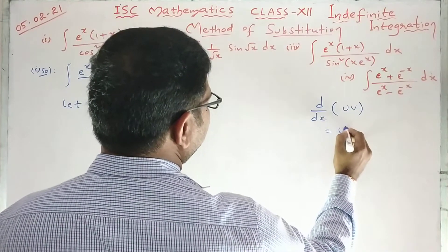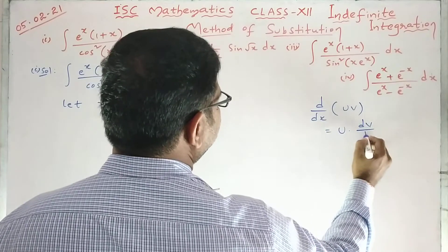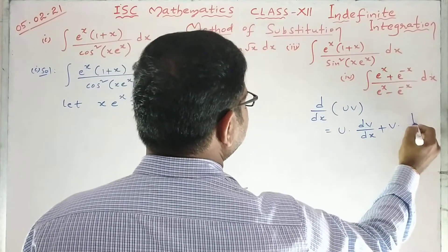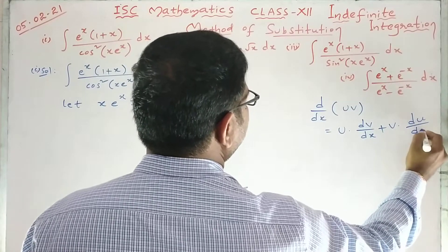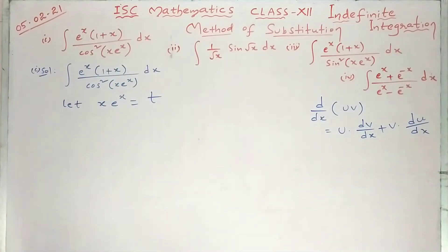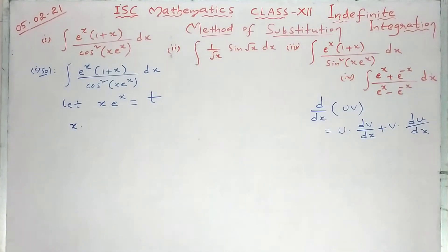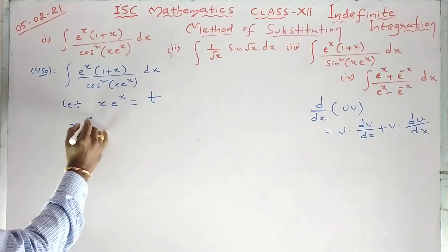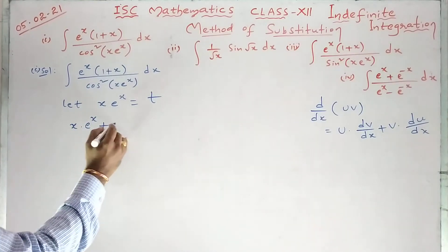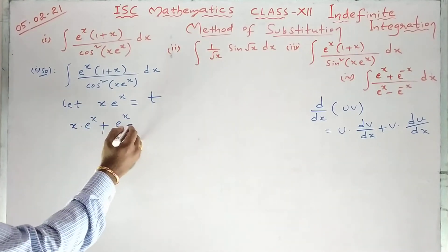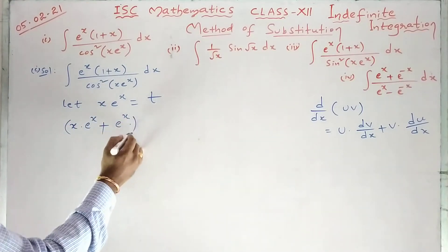You remember the product rule: first function into derivative of second function, plus second function into derivative of first function. This is the product rule we use in differentiation. Here, the first function is x. Derivative of e^x is e^x, plus e^x times derivative of x is 1.